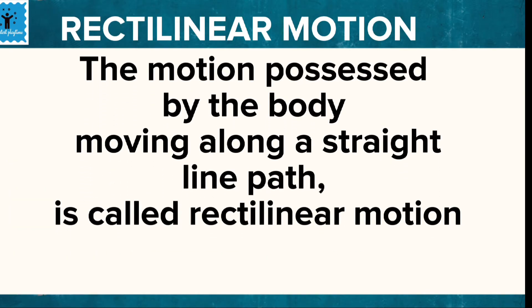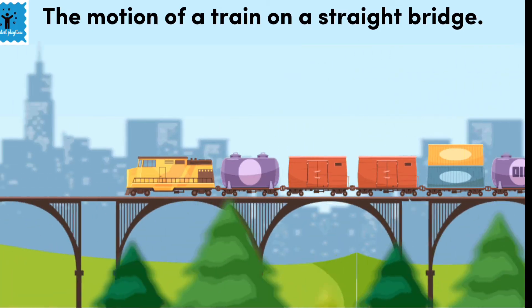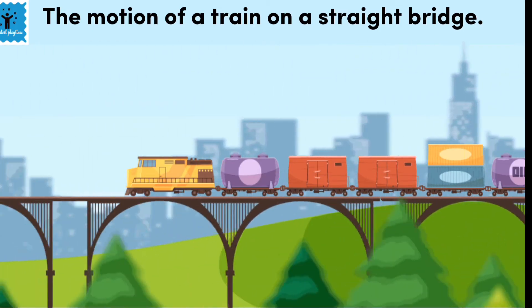When a body moves along a straight line path, it is said to be in rectilinear motion. For example, the motion of a train on a straight bridge is rectilinear motion.